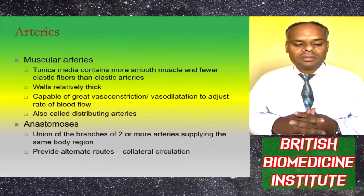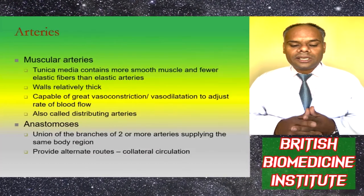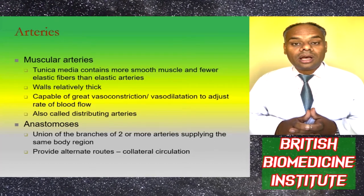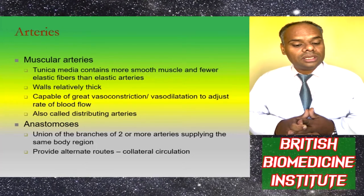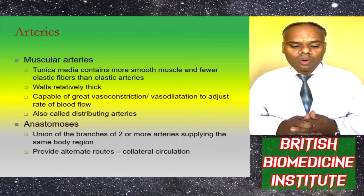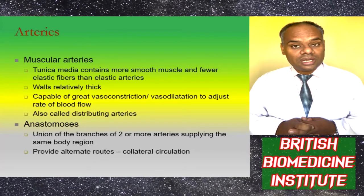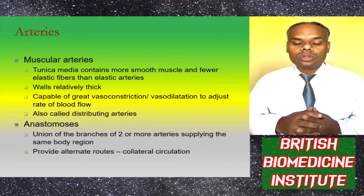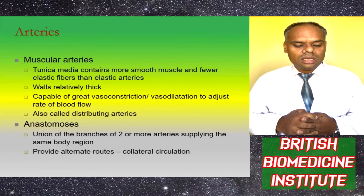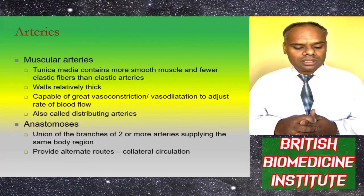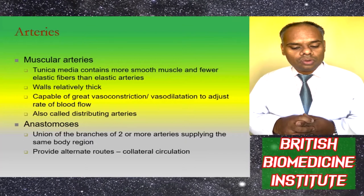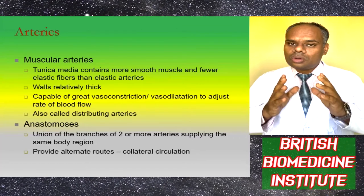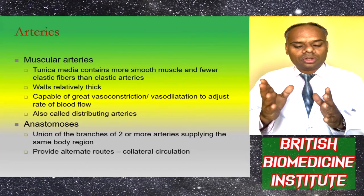Muscular arteries have tunica media containing more smooth muscle and fewer elastic fibers than elastic arteries, with a relatively thick wall. They are capable of great vasoconstriction or vasodilation to adjust the rate of blood flow and are also called distributing arteries. Anastomosis is the union of branches of two or more arteries supplying the same body region, providing alternative routes such as collateral circulation.